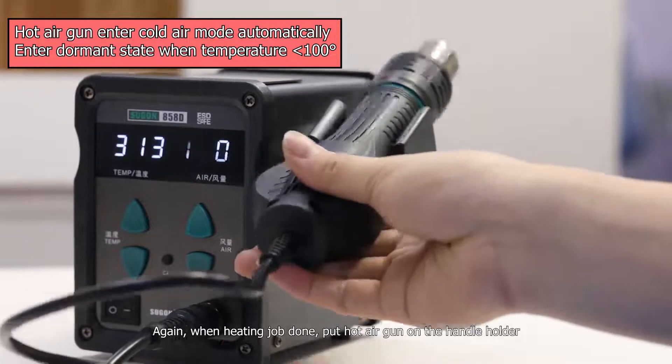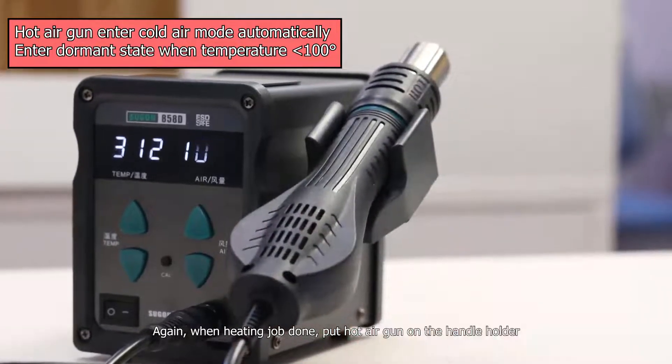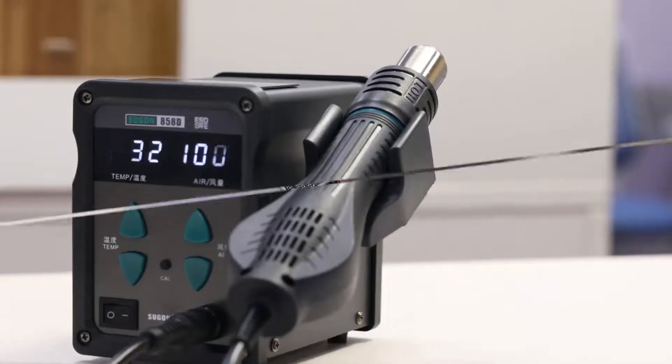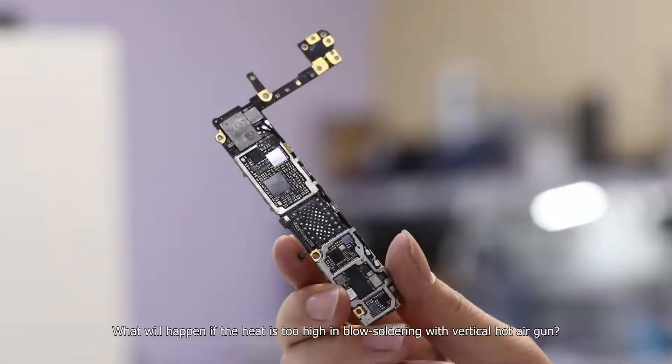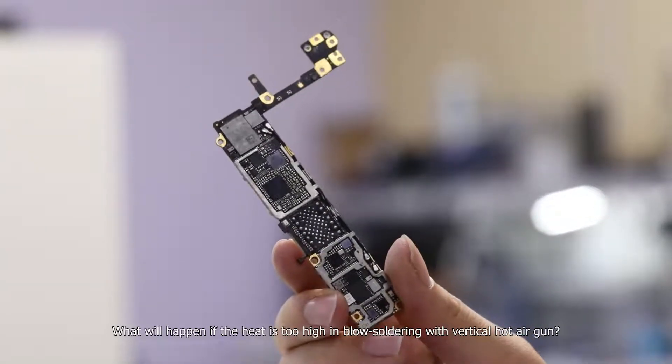Again, when heating job done, put hot air gun on the handle holder. What will happen if the heater is too high in blow soldering with vertical hot air gun?